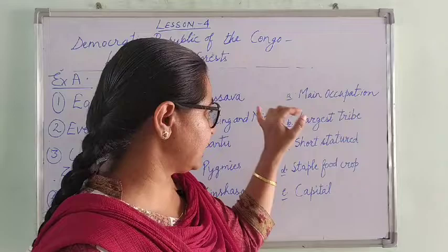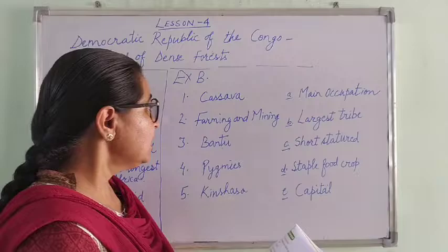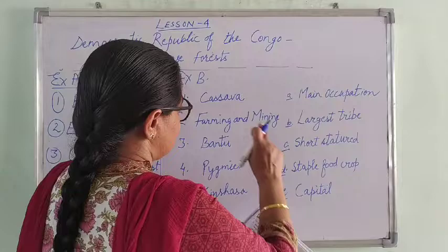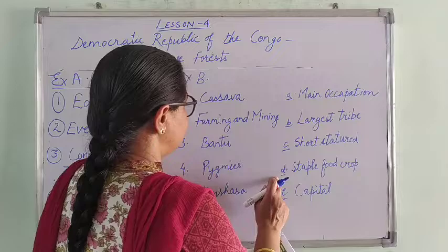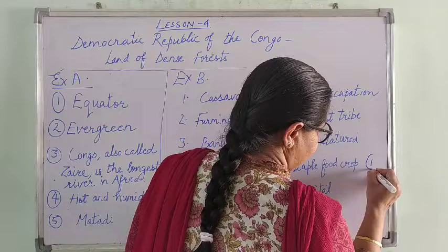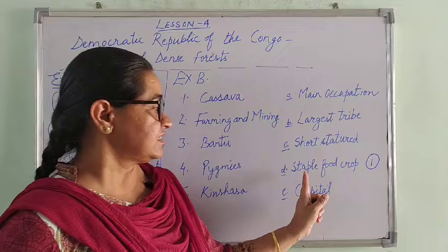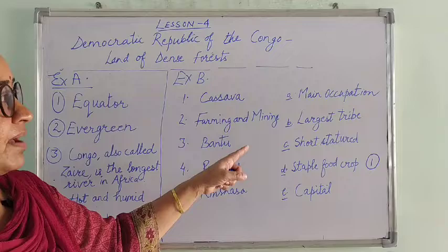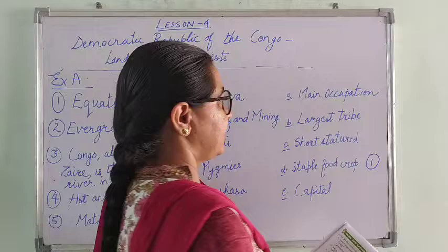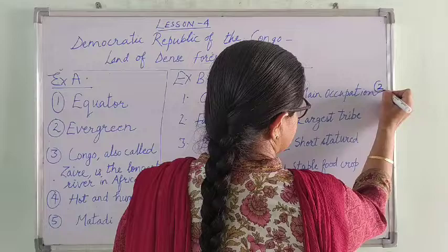Exercise B relates to matching the following. You are given two columns — column one numbered 1 to 5 and column two numbered A to E. We need to find the right match from column B for each item in column one. First is Cassava — Cassava is the staple food crop of Democratic Republic of Congo. So number 1 matches with D — Staple food crop. Second is Farming and Mining — this is the main occupation of the people here, so it matches with Option A.